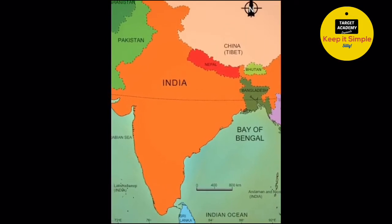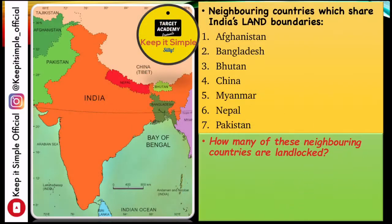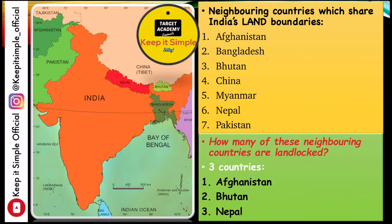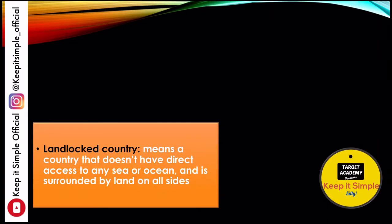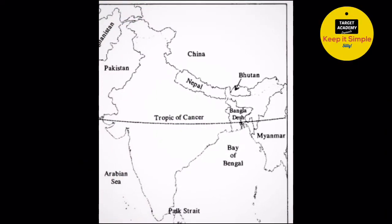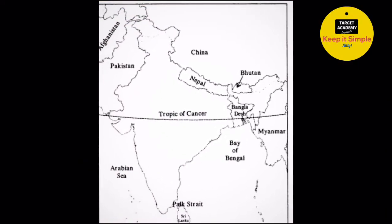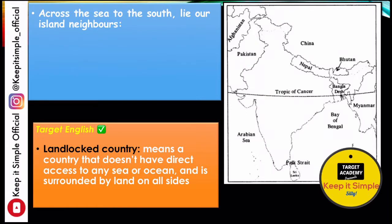Among these 7 countries, 3 are landlocked — Afghanistan, Bhutan, and Nepal. What is landlocked? It is very simple: a landlocked country is one that doesn't have direct access to any sea or ocean and is surrounded by land on all sides. So these three countries are surrounded by land on all four sides and have no direct access to any sea or ocean.